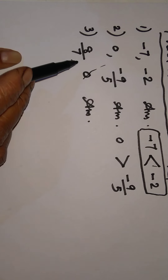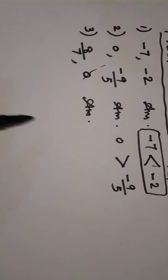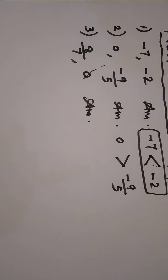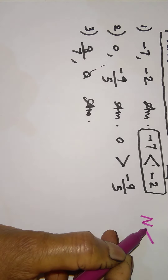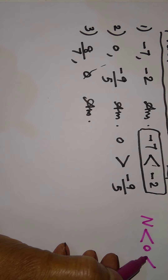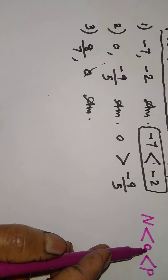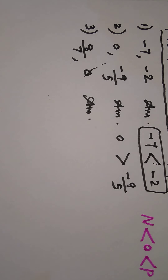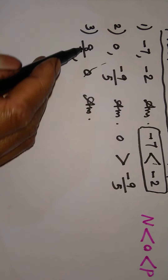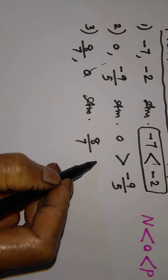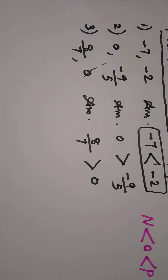Next question: 8 upon 7 is positive and 0. We must always remember: all negative numbers are smaller than 0, and all positive numbers are greater than 0. So this answer is direct — because 8 upon 7 is a positive number, positive number is bigger. Therefore 8 upon 7 is greater than 0.